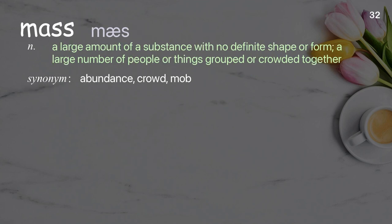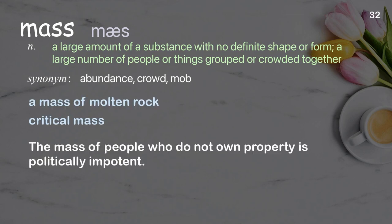Mass: A large amount of a substance with no definite shape or form; a large number of people or things grouped or crowded together. Examples: a mass of molten rock, critical mass. The mass of people who do not own property is politically impotent.